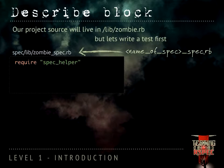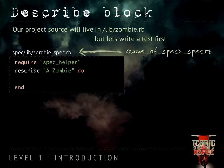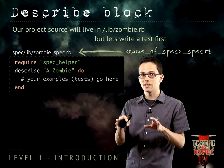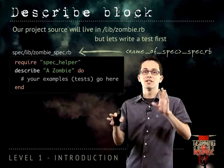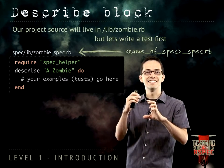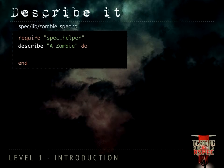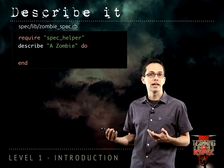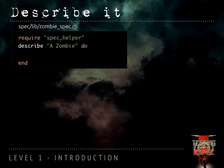Inside this file, we're going to require the spec helper, which will load the configuration for the specification. Now we need to describe how we want a zombie to behave, so we start with writing a describe block: describe Zombie do. We would then put our tests — but we don't call them tests in here, we call them examples. We need to provide a lot of examples to test our zombie inside of our specification. We want our zombie to be named Ash, so we declare our first example using the it method: it 'is named Ash'.